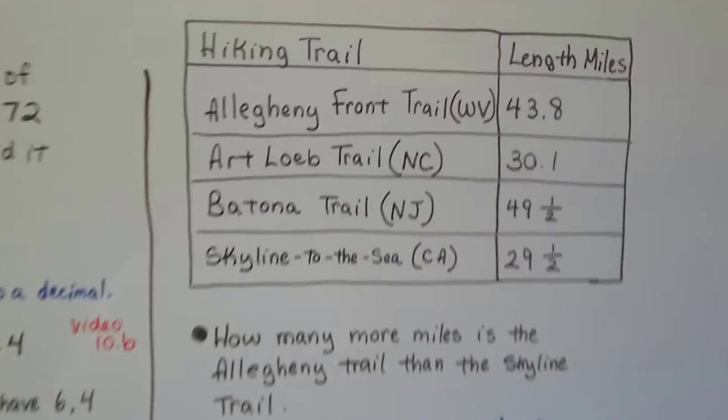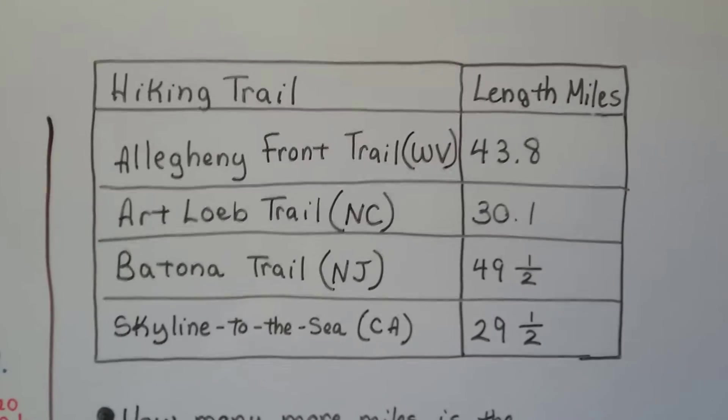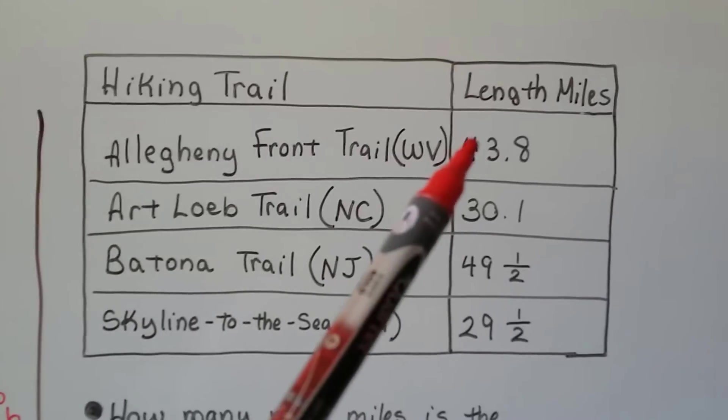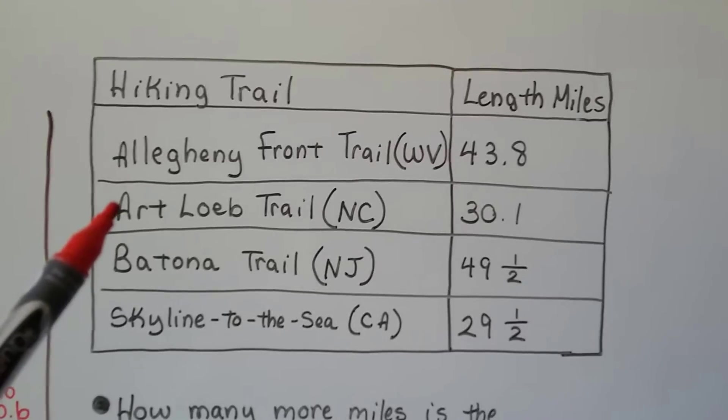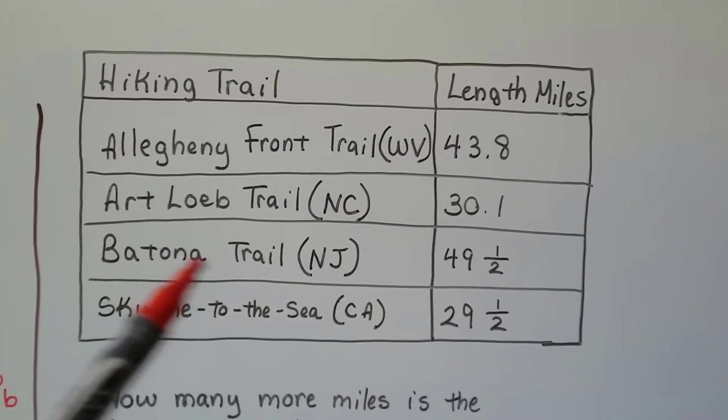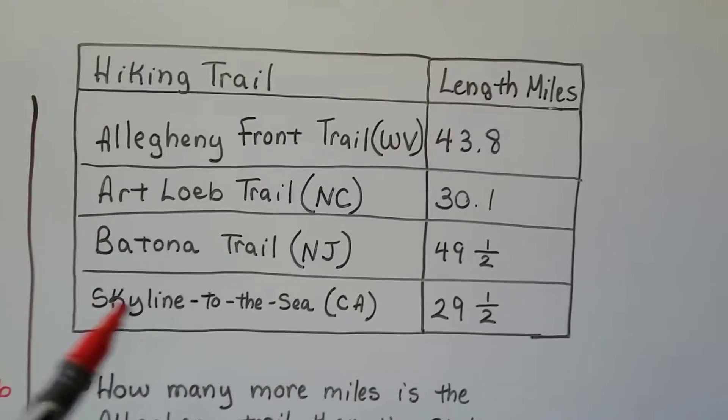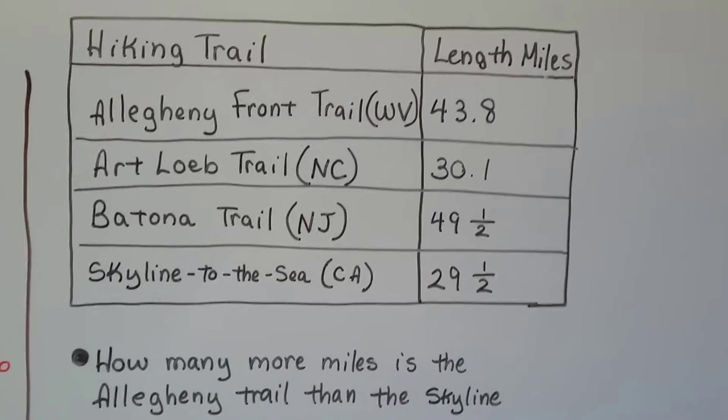So, here I've got a chart. It shows hiking trails and their length in miles. We've got the Allegheny Front Trail in West Virginia. It's 43 and eight-tenths of a mile. The Art Lope Trail in North Carolina is 30 and one-tenth. The Batona Trail, and I hope I'm saying that right, in New Jersey is 49 and a half miles. And the Skyline to the Sea in California, that trail is 29 and a half miles.